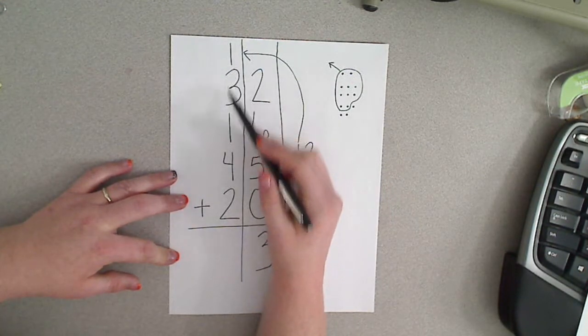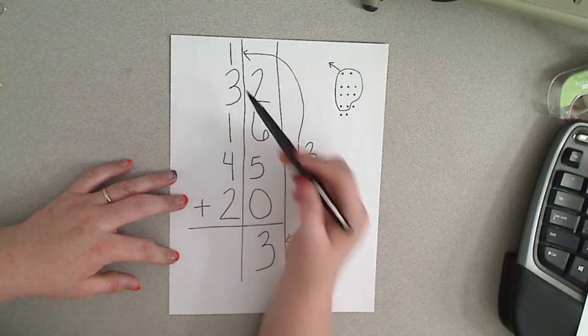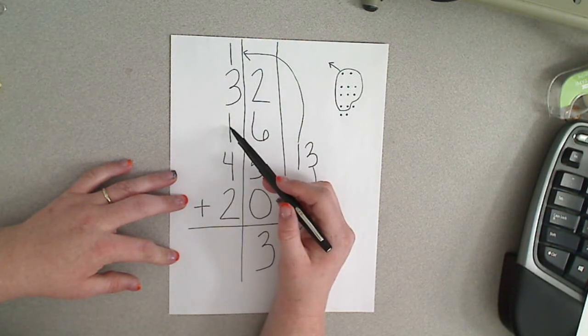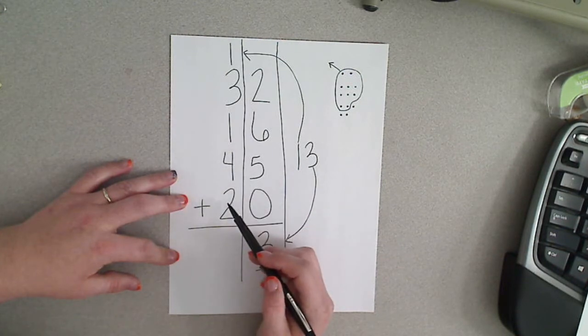Then we need to add everything that is in our tens column. 1 plus 3 is 4, plus 1 is 5, plus 4 is 9, plus 2 is 11.